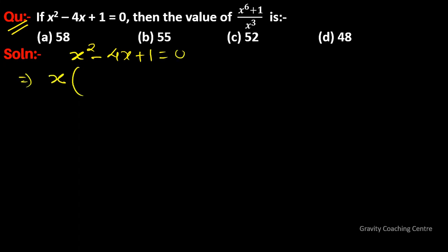We take x as common, so x minus 4 plus 1 upon x equals 0. Note that we cannot take x equal to 0.